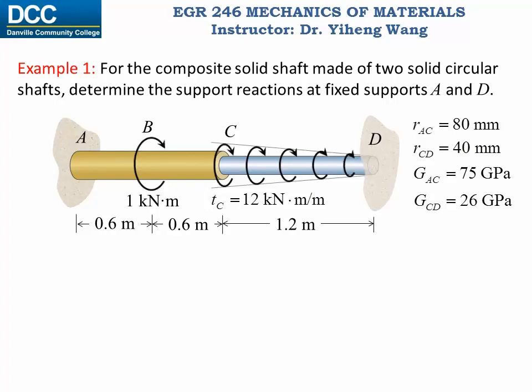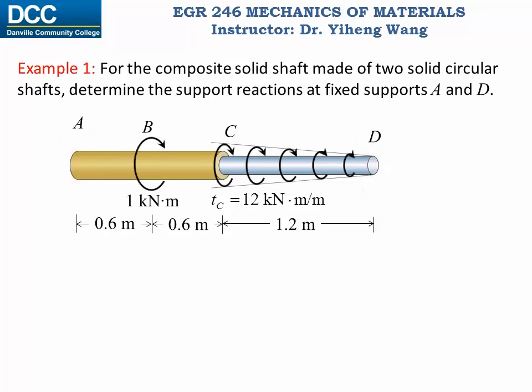Let's first write the equilibrium conditions. Starting with the free body diagram of this shaft, we need to set up the coordinate system. I set my x-axis along this direction, so point A corresponds to x equals 0, point B corresponds to x equals 0.6 m, and point D corresponds to x equals the total length of the shaft, which is 2.4 m.